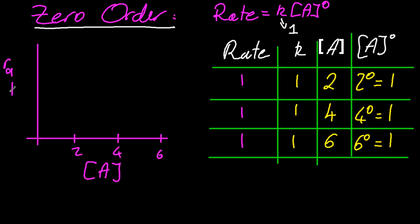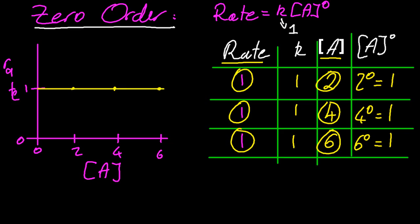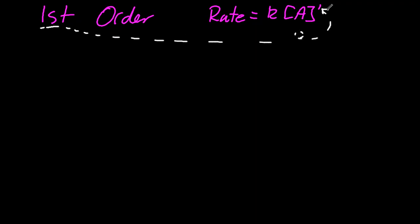There are two sorts of graphs the IB want you to know. The first is rate against the concentration of A. And plotting that, it's 1, 2, 1, 4, 1, 6. So that gives me a straight line, a horizontal line. And that's a classic zero order graph. The concentration of A has nothing to do with the rate. A changes, the rate is constant. So that means that A must be to the power zero.